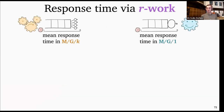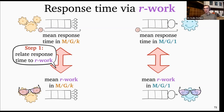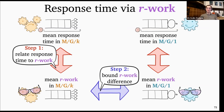Here's how we get response time via R-work. We're trying to relate the mean response time in the MGK to that in the MG1, and we're going to do this by going via R-work. The first step is to relate mean response time to mean R-work in a very general way — this relationship works for both the MGK and the MG1, and actually for more general queuing systems. The second step is to bound the difference in R-work, and then passing that through gives us the desired bound on the mean response time difference.